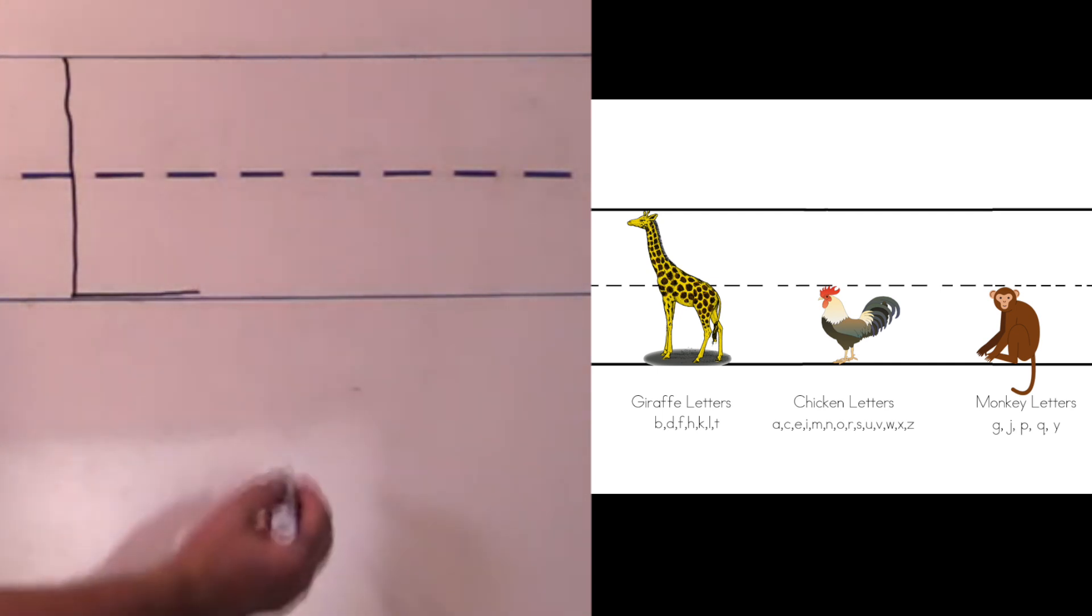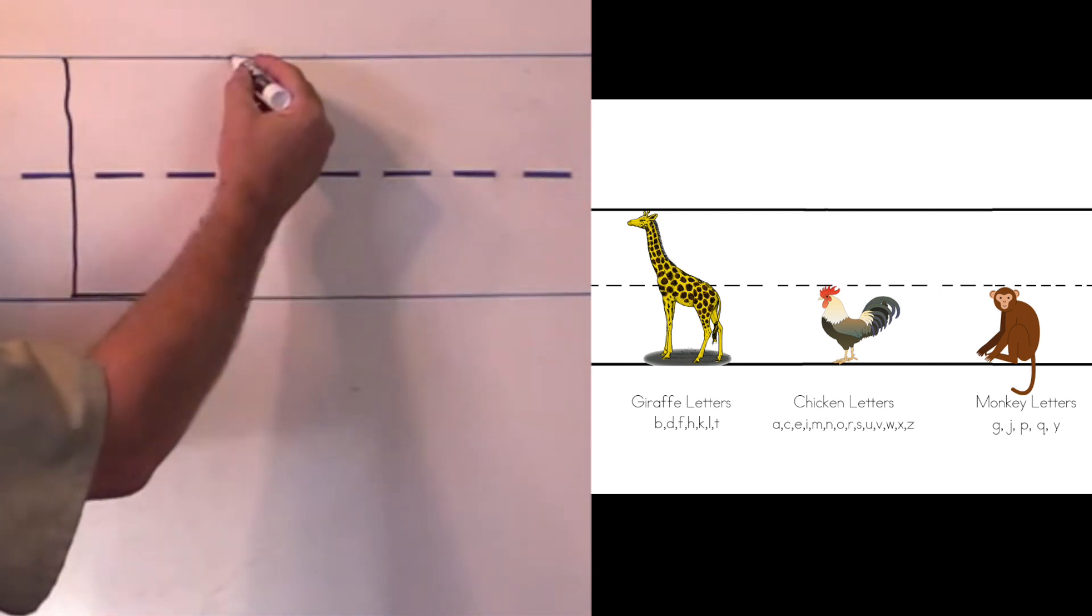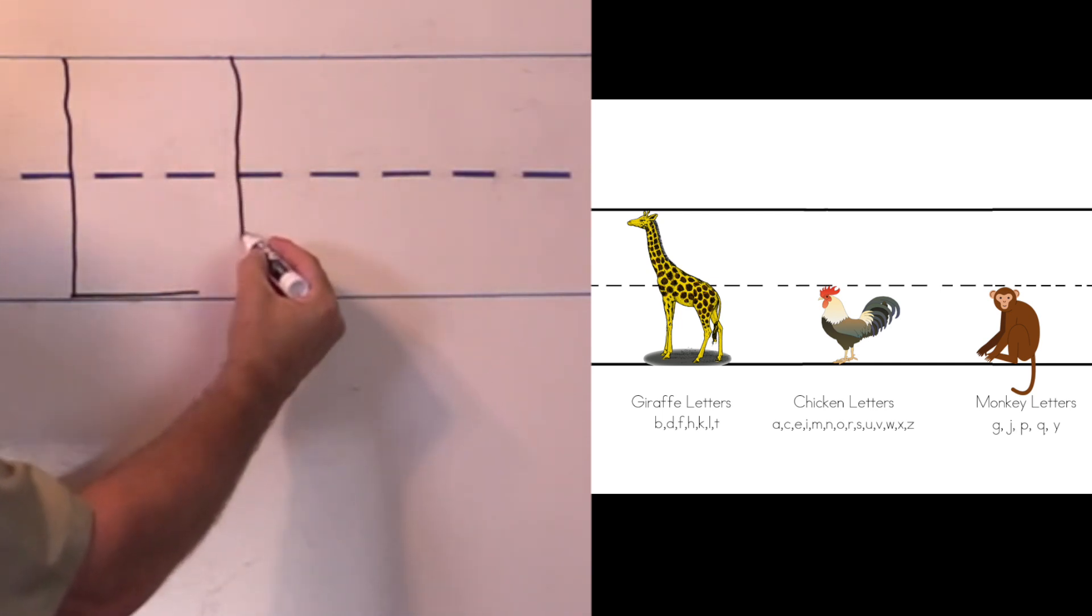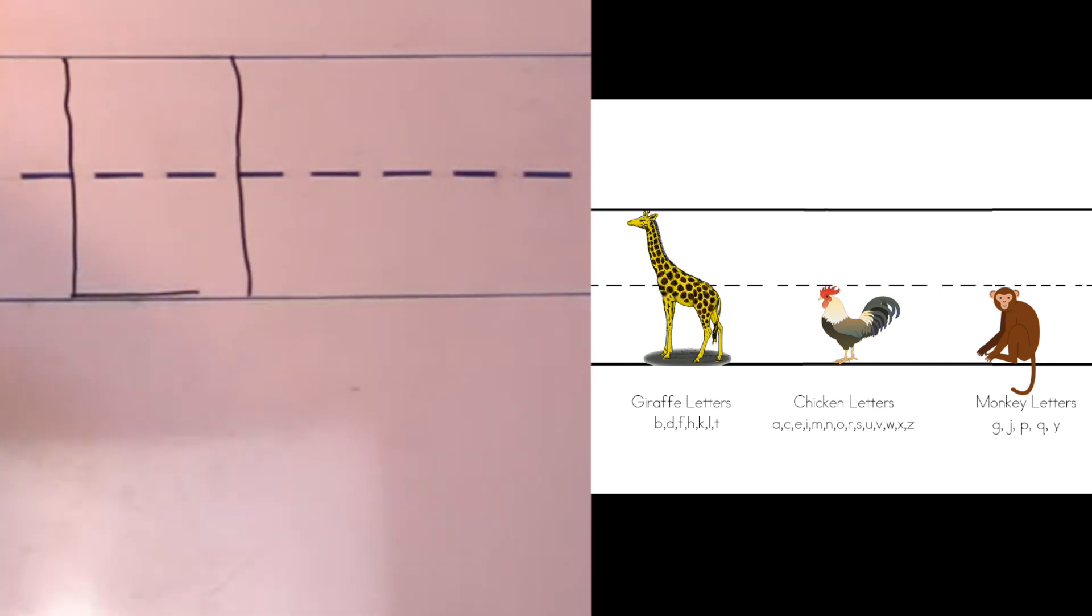Now, with the lowercase L, I start at the top. And what do I do? I just go straight down. That's right. Do it with me. There we go. And then I stop at the bottom line. And there's my lowercase L.